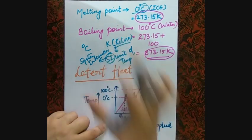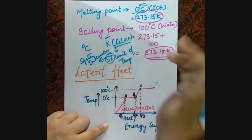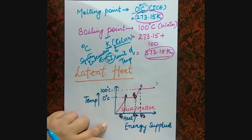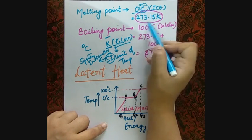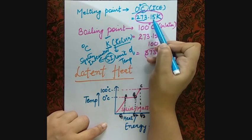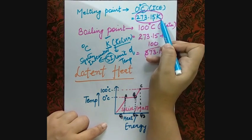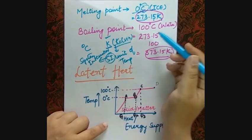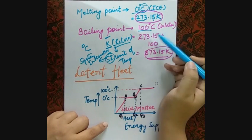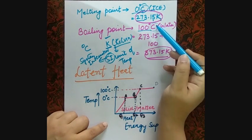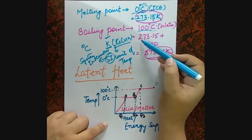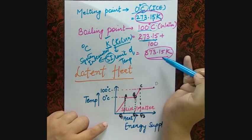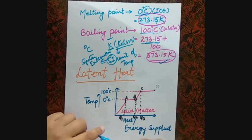0°C equals 273.15 Kelvin. Remember this for numericals. So if the boiling point is 100°C, what do you do? You add 273.15 — so 100 + 273.15 = 373.15 Kelvin. That is the boiling point in Kelvin.